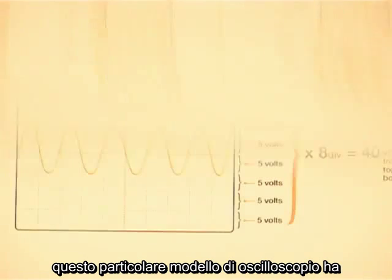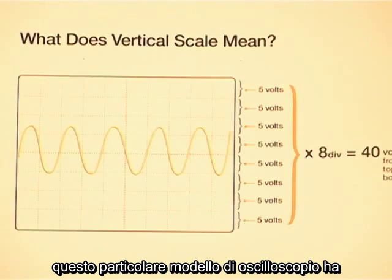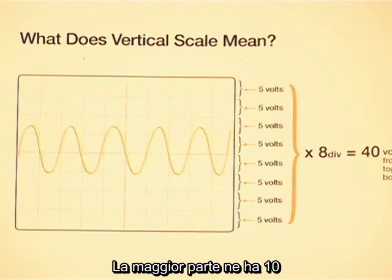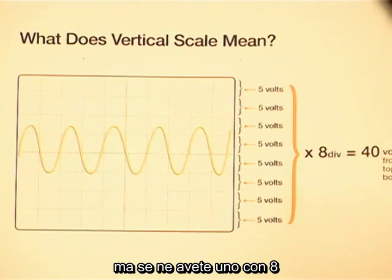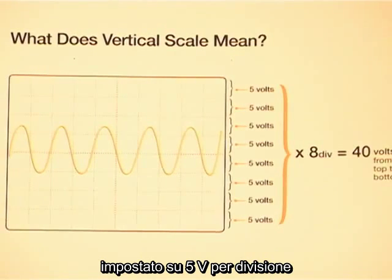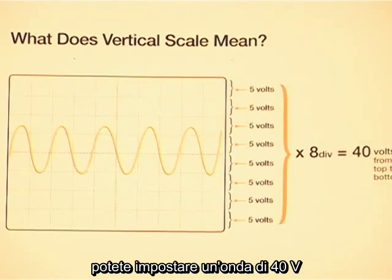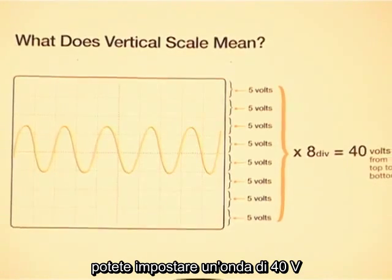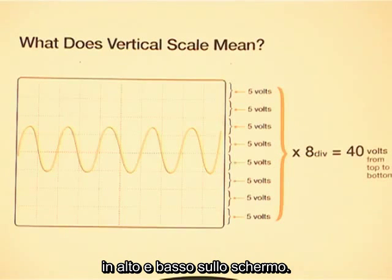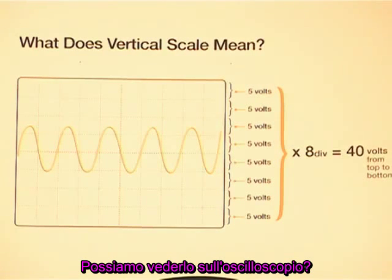The vertical position moves the waveform up and down the screen, and the vertical scale expands or compresses the waveform vertically. Vertical scale is expressed in volts per division. This particular model of scope has eight vertical divisions — most scopes have ten. If you have eight divisions set to five volts per division, you could fit a 40-volt peak-to-peak sine wave on the screen.